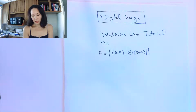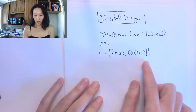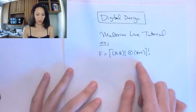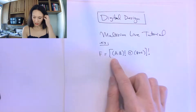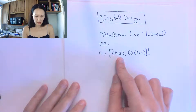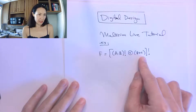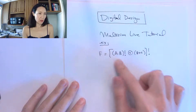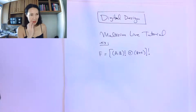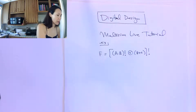Just for an example, I'm going to show you how to implement this function using a digital circuit. This is going to be A NANDed with B, and this is going to be B ORed with C, and that result is going to be XNORed. Let me do a screen share here.